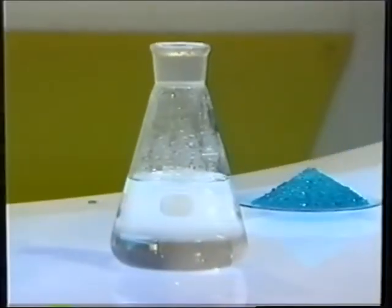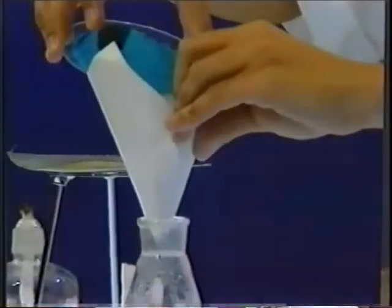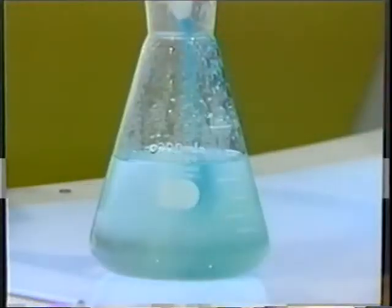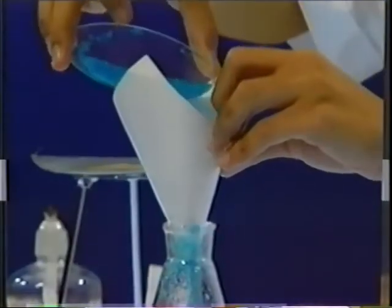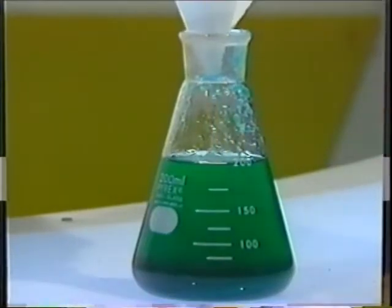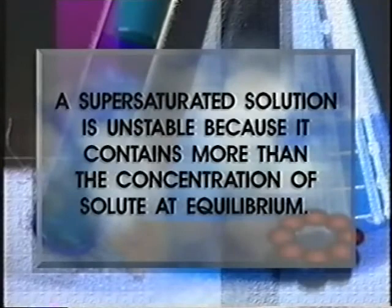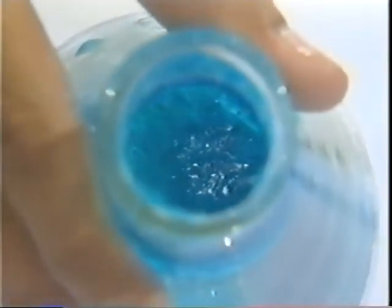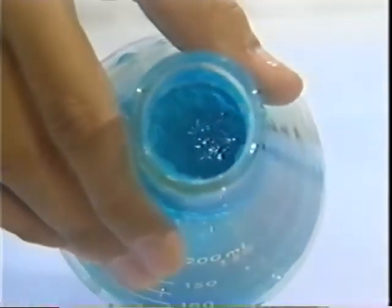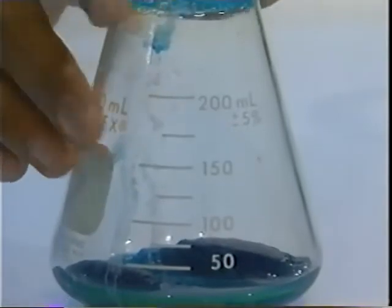Recall how we prepared a supersaturated solution of nickel sulfate in an earlier episode. First, we prepared the saturated solution of the solid in a liquid at a high temperature and cooled it, making sure to leave it undisturbed. A supersaturated solution is unstable because it contains more than the solubility limit of solute at equilibrium. Seeding the solution with a crystal of the solute results in the formation of larger crystals within a few days.